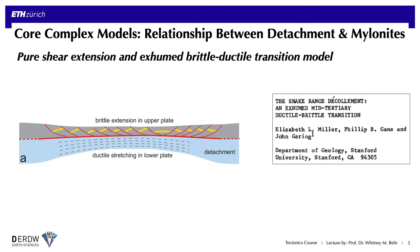Now considering models for the relationship between the detachment and the mylonites: one of the earliest models was the idea of pure shear extension brought forth by Elizabeth Miller. She suggested that perhaps core complexes and their detachments don't represent large amounts of displacement — perhaps they're just a surface marking the brittle-ductile transition, exhumed to the surface through pure shear thinning and erosion. The trouble with this model is that these core complexes all show evidence for dominant simple shear and strong shear sense indicators, with many showing tens of kilometers of displacement. The Whipple detachment, for example, has displaced markers suggesting over 40 kilometers of displacement.